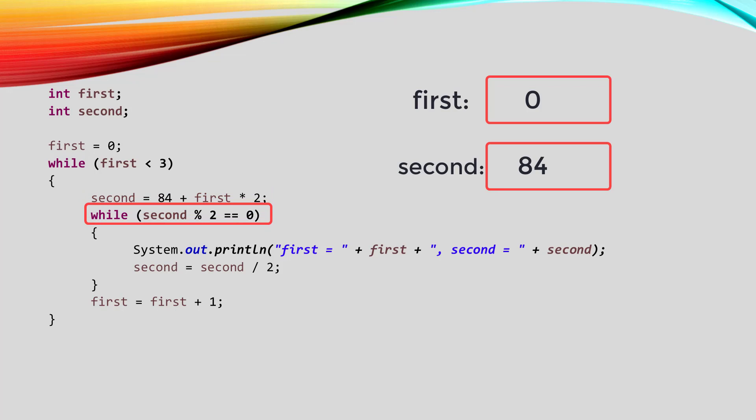The second loop starts by comparing second mod two to zero. Now that percent sign is the modulus operator, which is the remainder after you do the division. So if we take what's in second, which is 84, and divide it by two, there's nothing left over, because two goes into 84 evenly. So second mod two is zero, so this condition is true, so we go inside the while loop.